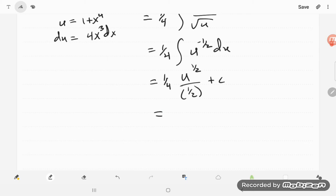and inverting and multiplying by the 1 half there, so that becomes a 2. I'll get 2 fourths or 1 half, and u to the 1 half, while u is 1 plus x to the fourth, all to the 1 half, plus c.